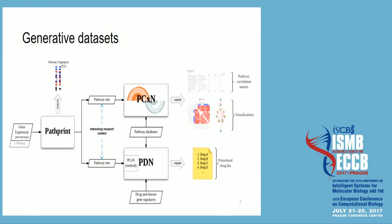Thirdly, we have PDN, which uses the same type of networks but enriches them with drug and disease signatures. It turns gene signatures into nodes, giving you bigger networks, and you try to extract prioritized drug lists. So this is our end goal: we start from gene expression and go to prioritized drug lists if we use all these tools.